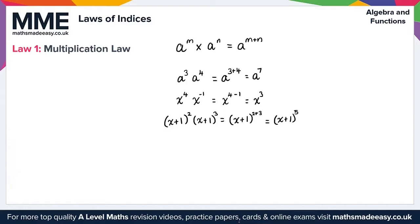We can also do this with fractional powers. For example, t to the power of one fifth times by t to the two fifths. In this case we just simply add the fractions together, so that's t to the one fifth plus two fifths, giving us t to the three fifths.